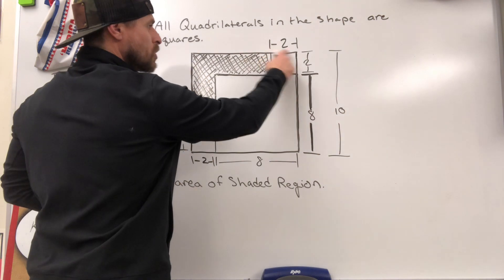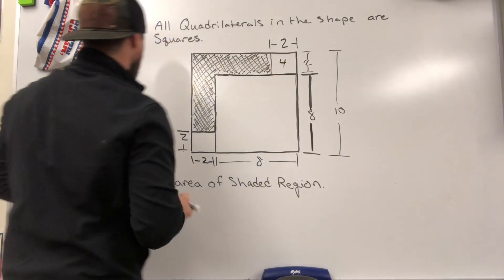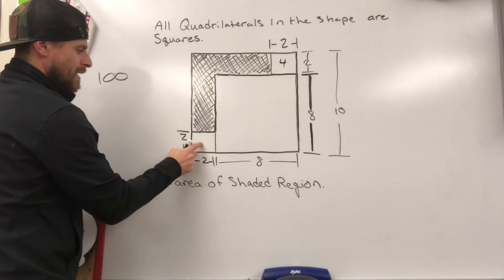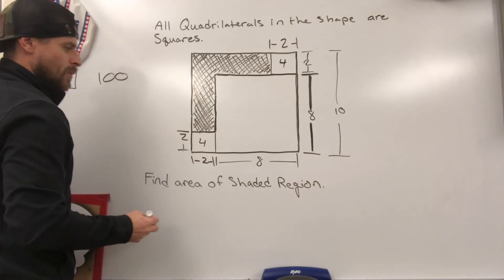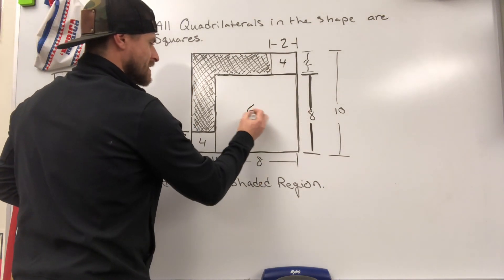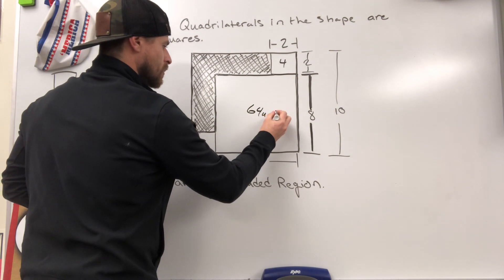Okay, we've got this one which is a 2 by 2, that'd be 4 units squared. We've got this which is a 2 by 2, that's also 4 units squared. And then 8 times 8 would give me 64 units squared.